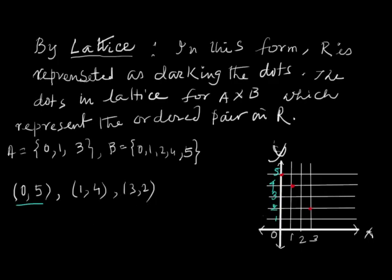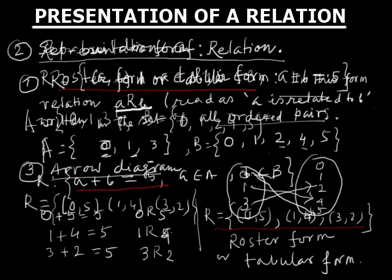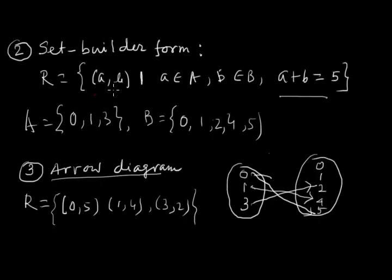There are four forms. One is the roster form or tabular form, where we write the ordered pairs as per the relation defined A plus B equals 5. We write all the ordered pairs in a set. Then set builder form or rule form, where we write the rules as A plus B equals 5, where A belongs to set A and B belongs to set B. Then arrow diagrams where 0 connects to 5, 1 connects to 4, and 3 connects to 2.